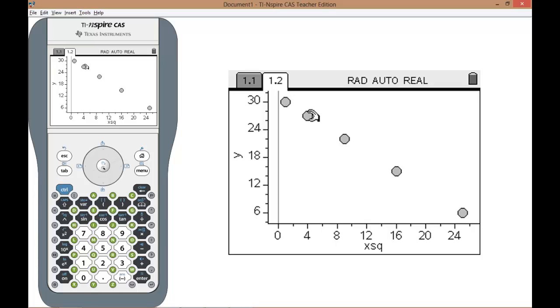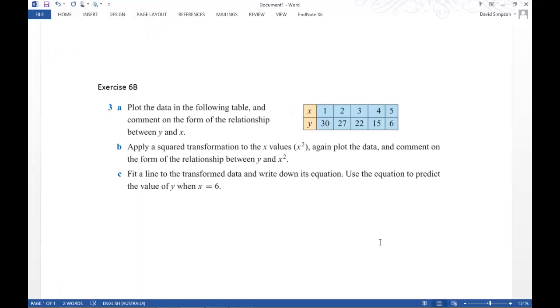Now that we've done that we can say that there is a strong negative linear relationship between the x squared variable and the y variable in this example. So that would be the comment between y and x squared.